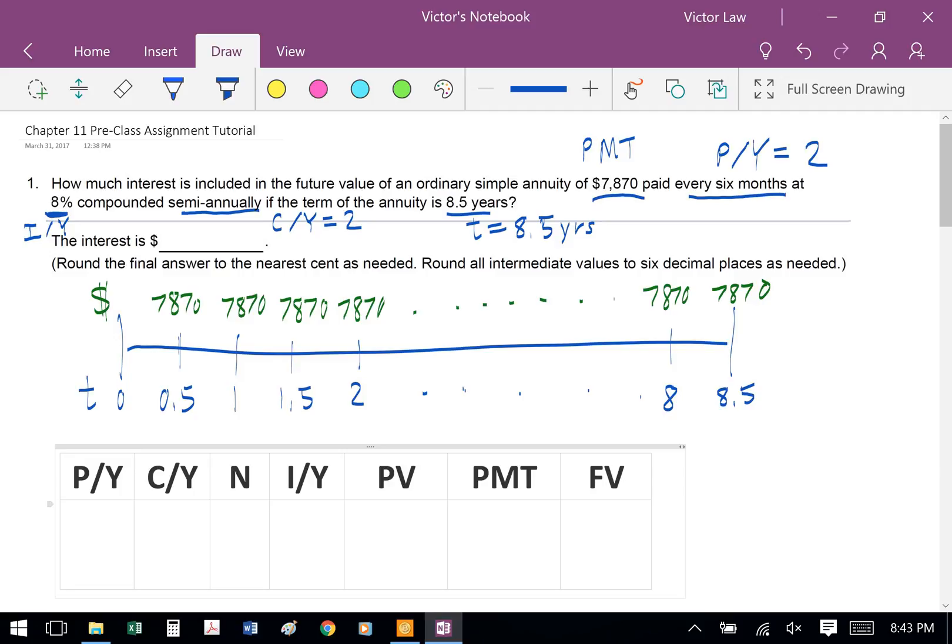To solve this question, we can first draw a timeline to visualize. At the bottom we have T representing our timeline: 0, 0.5, 1, 1.5, 2, all the way to 8.5 years. On the top we have the $7,870 for each payment. Every half year we're making a payment of $7,870, starting at 0.5 and the last payment at year 8.5.